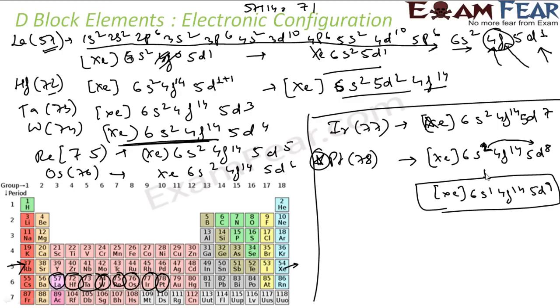The next is gold. Gold is 79. Here 70 electrons again taken care by xenon 6s² 4f¹⁴. Nine electrons will go to d. Again here is the logical shift of one electron to make it more stable because I am getting 6s¹ half stable, 4f¹⁴ full stable, 5d¹⁰ full stable. This is the electronic configuration of gold.